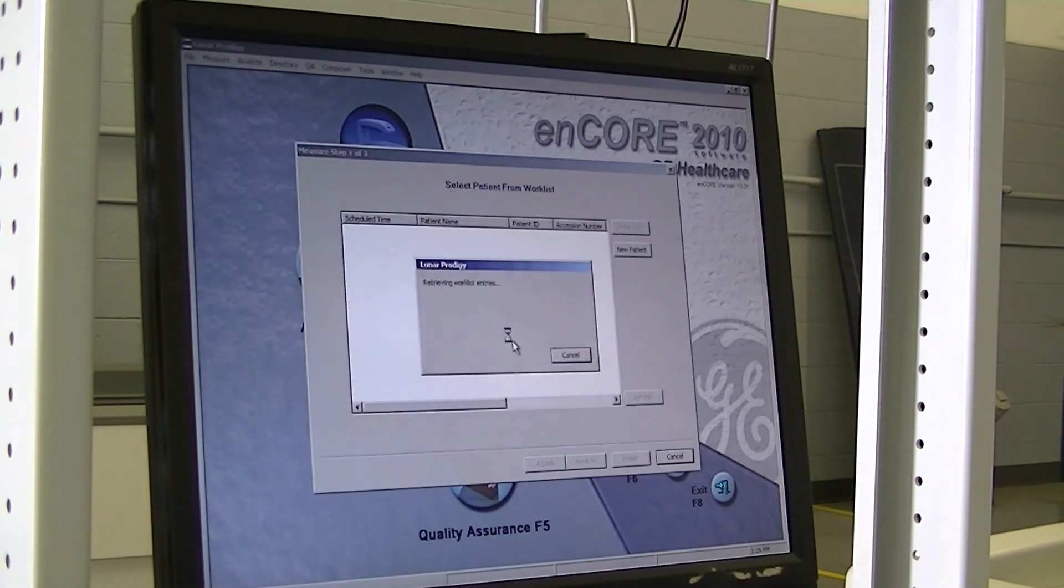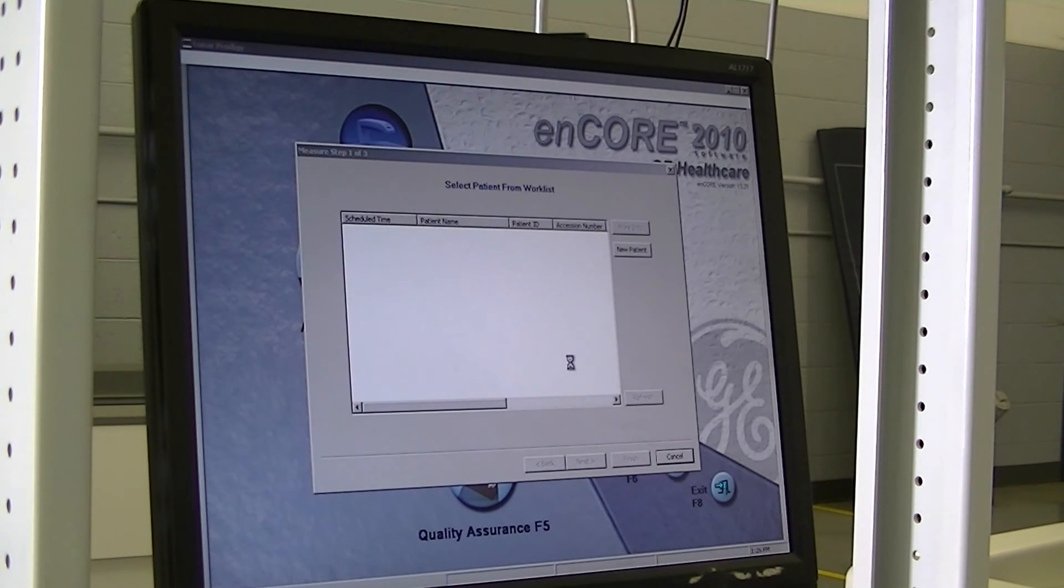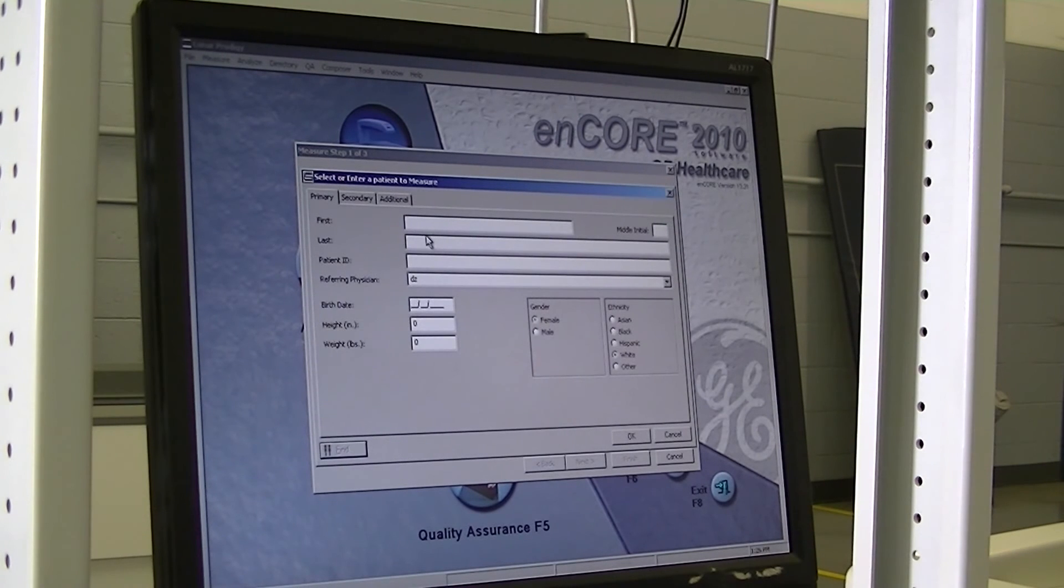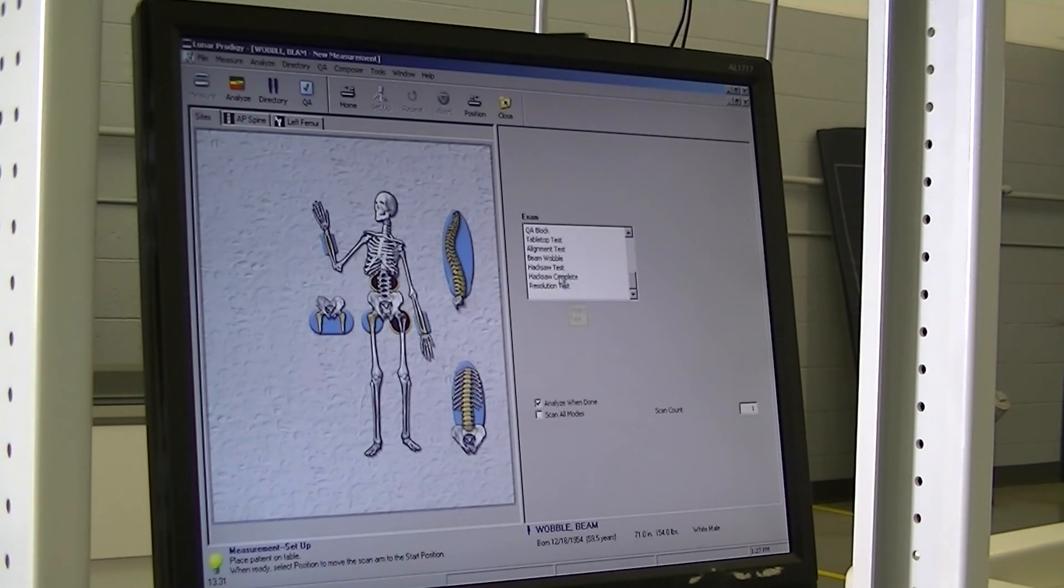New patient. New patient, first name: Beam. Last name: Wobble. Height: 71. Weight: 154. Male always must be selected. White. OK. Scroll all the way down on the right-hand page to Beam Wobble Test.